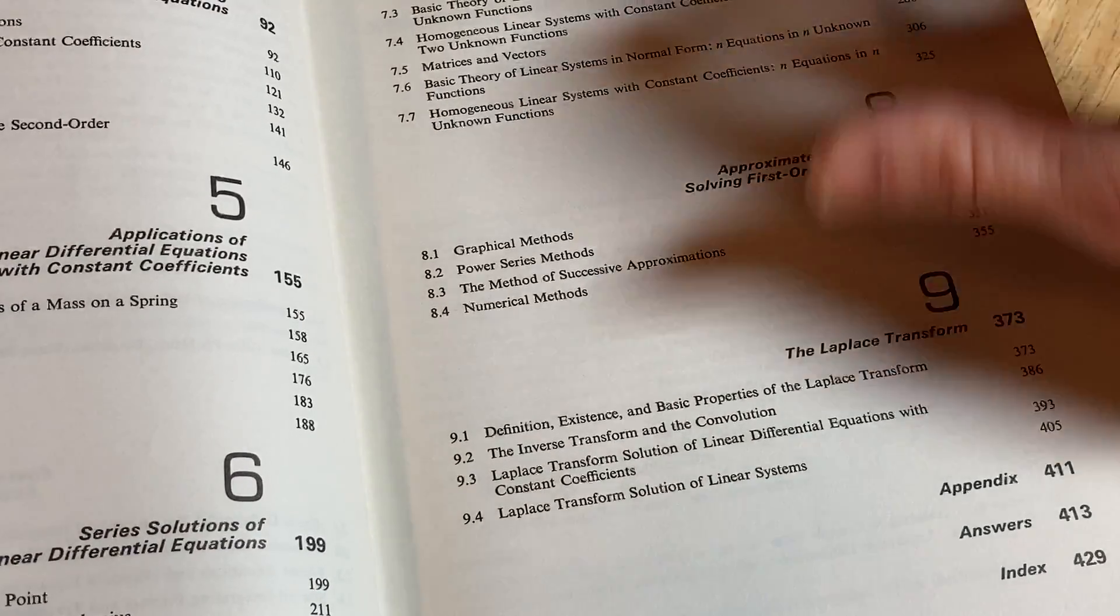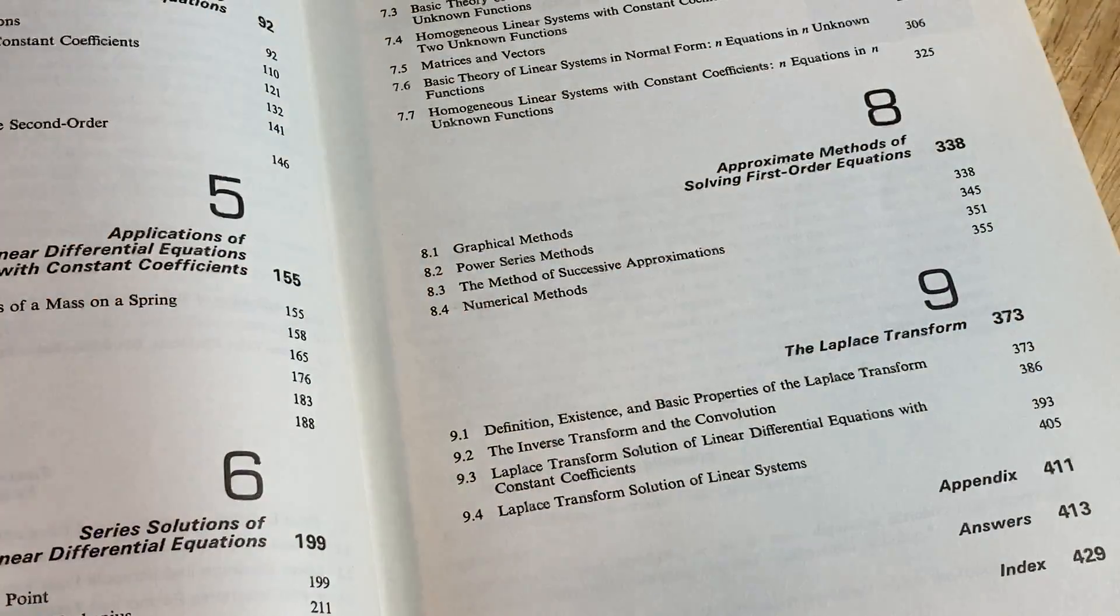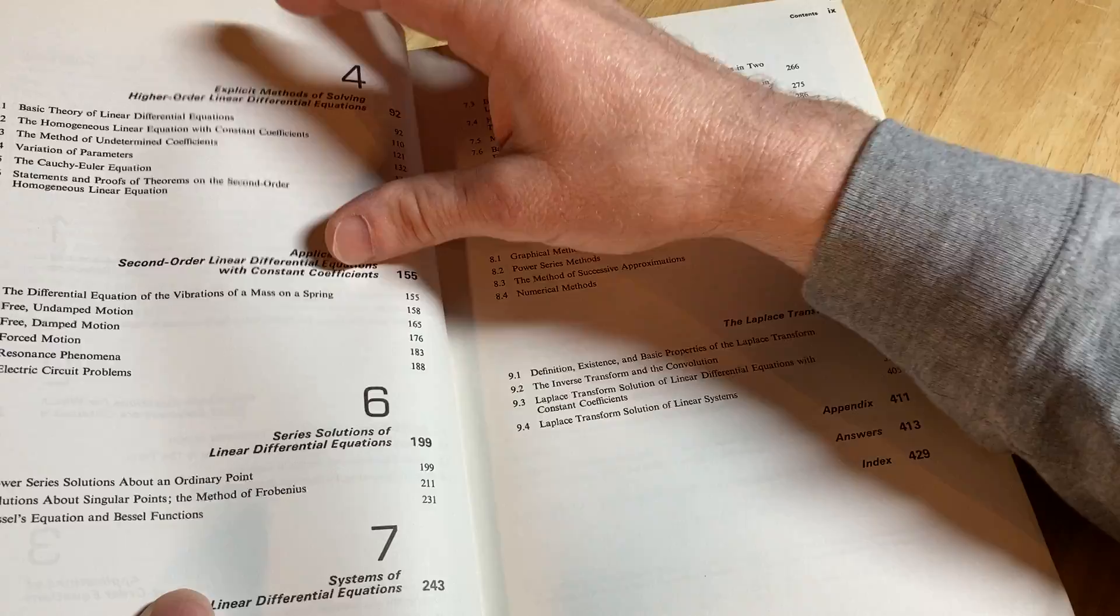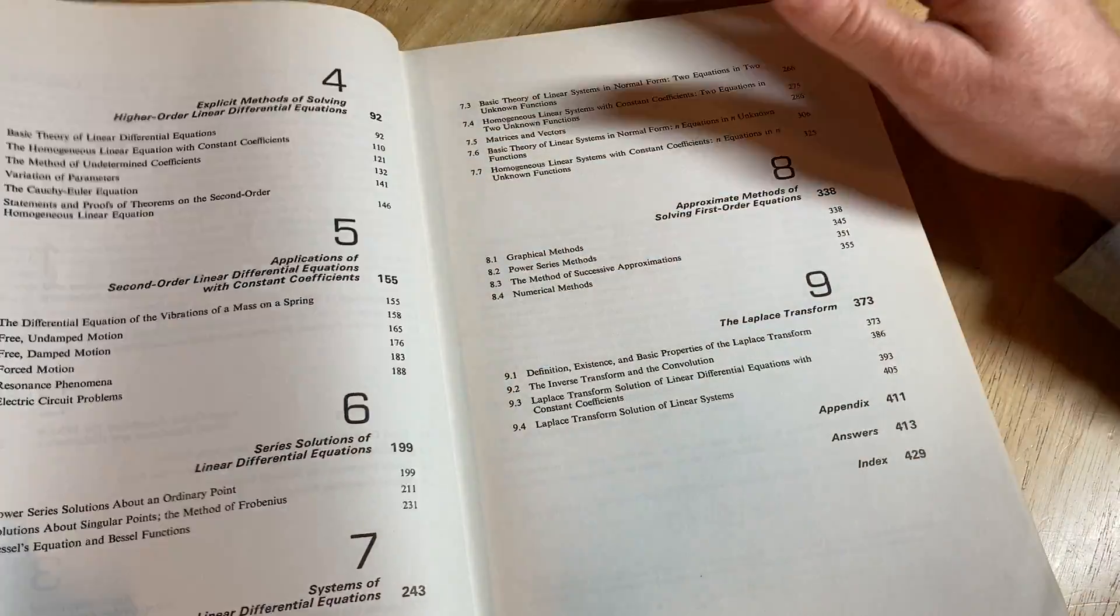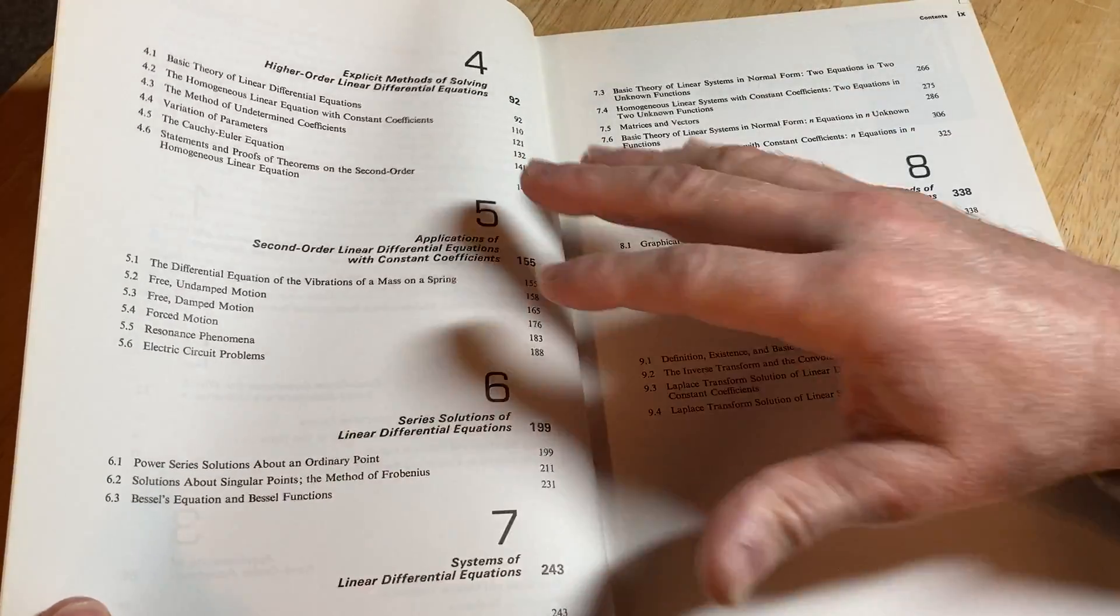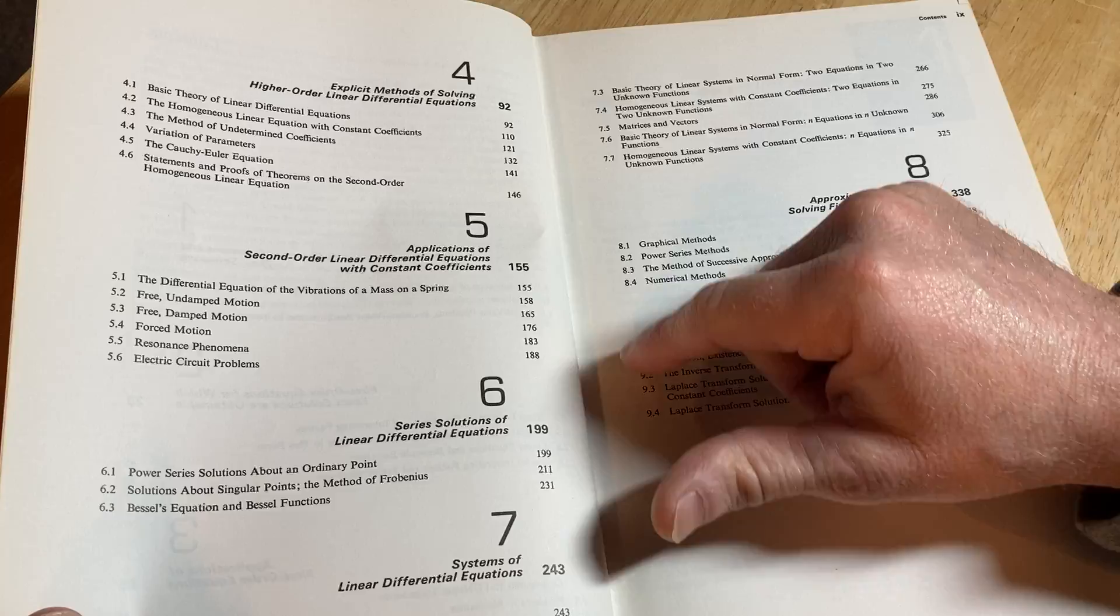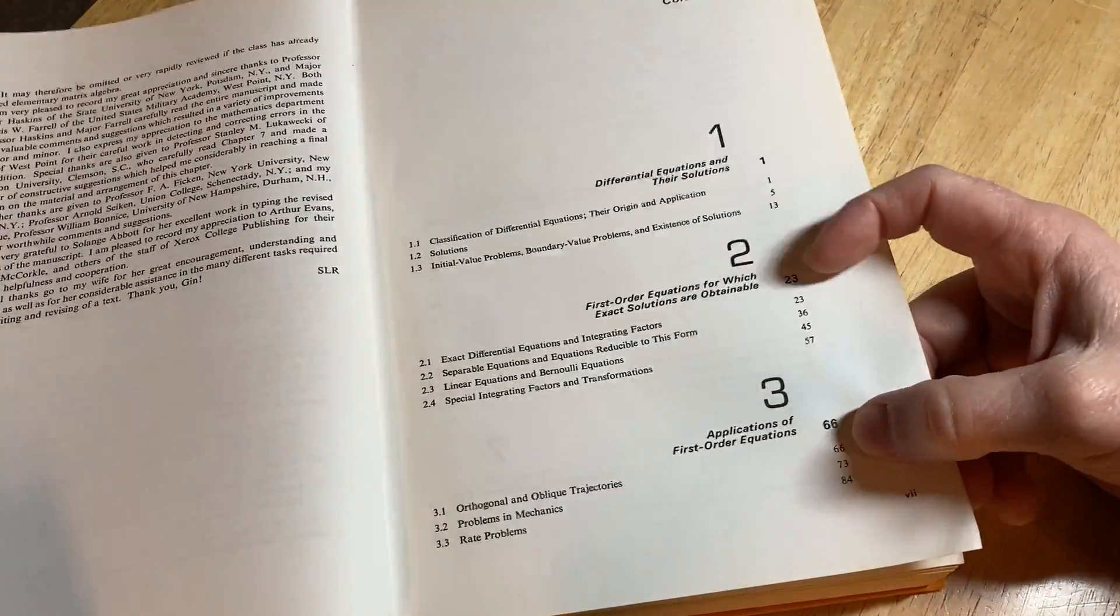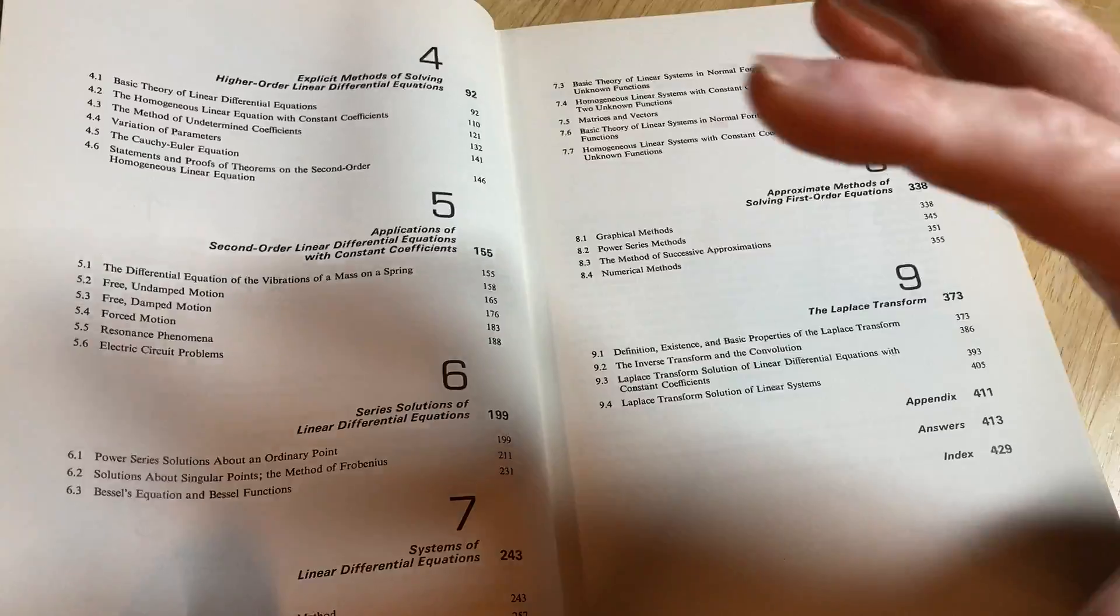Then it ends. A lot of Differential Equations books vary quite a bit in their content. But this one definitely has the core content, right? It's got the basic first order stuff and some higher dimensional stuff. Series Solutions, Laplace Transforms. And then it has some applications thrown in. In Chapter 5, you have the applications of the second order linear differential equations. And then in Chapter 3, you also have two chapters devoted to applications on top of the typical content that you cover.